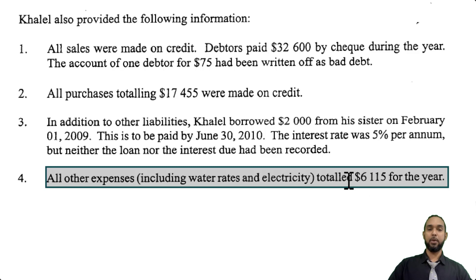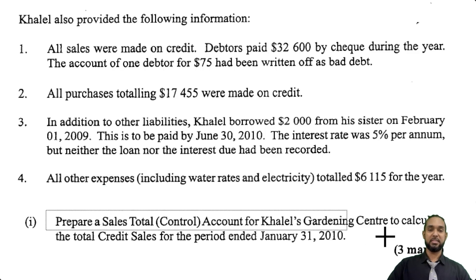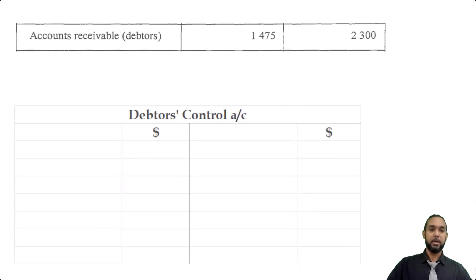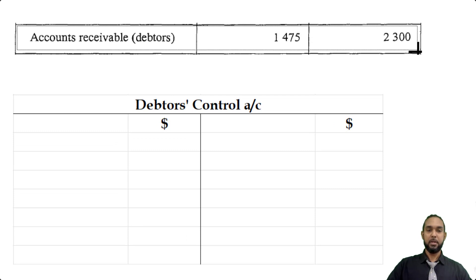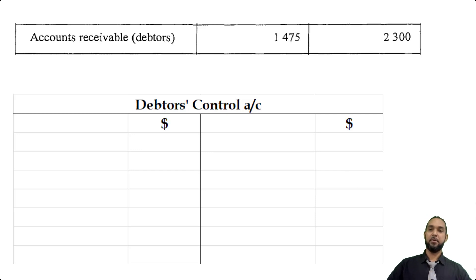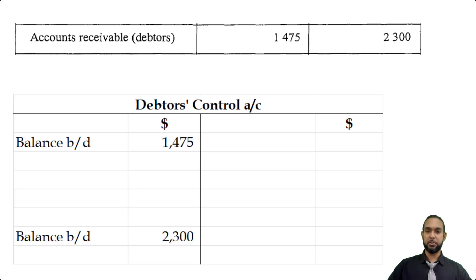The first thing they want us to do is prepare a sales total or debtors control account for Kalel's Gardening Center to calculate the total credit sales for the period ended January 31, 2010. It's a simplified debtors control account — we don't have the usual number of details. We'll start with the opening and closing balances: opening balance of $4,014.75 and closing balance of $2,300. Debtors is an asset, so assets have debit balances at start. The closing balance is brought down on the debit side but carried down from the credit side.